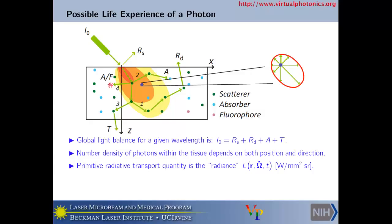The units of radiance are watts per square meter per steradian — photons per unit time, per unit area, per unit solid angle. How many photons are hitting that location per unit time varies with space and with propagation direction. There's a unit sphere that can be defined around any point, so this is a function of both space and direction. It's how we approximate this function in space and direction in standard diffusion that makes it break down in cases where absorption is comparable to scattering.